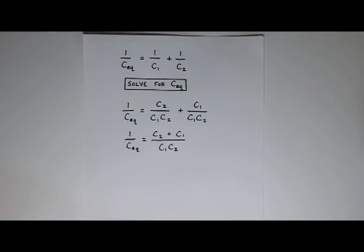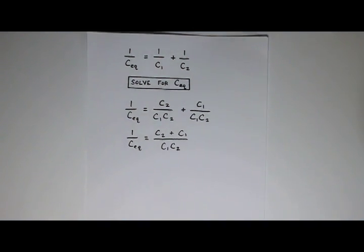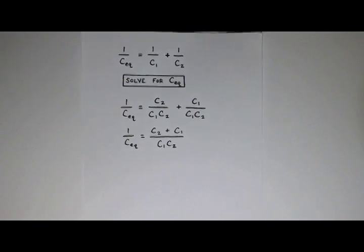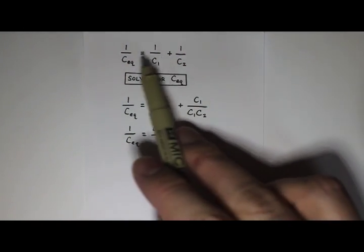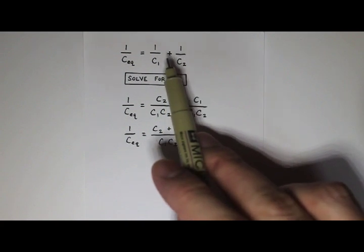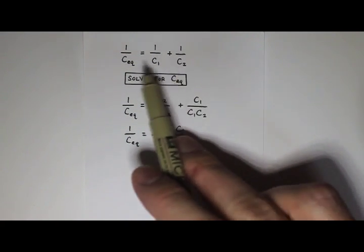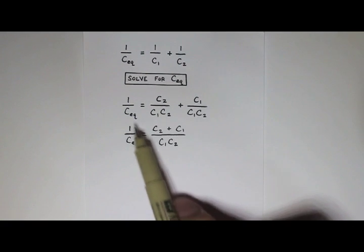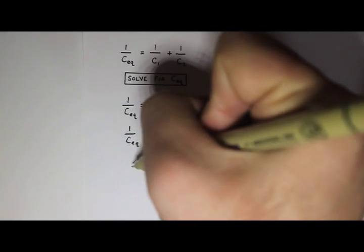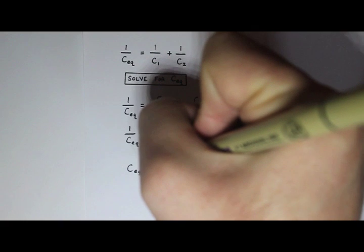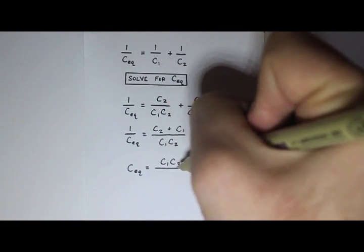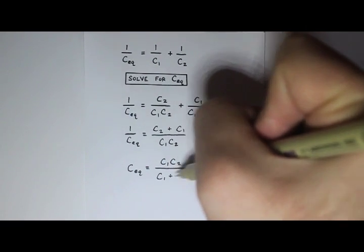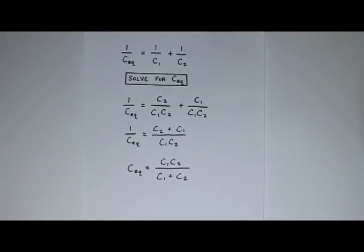Now that I have one fraction equal to another fraction, a little trick that I can use is to just flip both fractions. You can always do this if you have one fraction equal to another fraction. I couldn't do it here because I had one fraction equal to two other fractions added together. So the trick doesn't work right at the beginning. But now that I just have one fraction equal to another fraction, I'm just going to flip both sides. So I get c equivalent equals c1 c2 is now on top. And then the bottom, I'll just rewrite them in order, c1 plus c2. And that's my final answer.